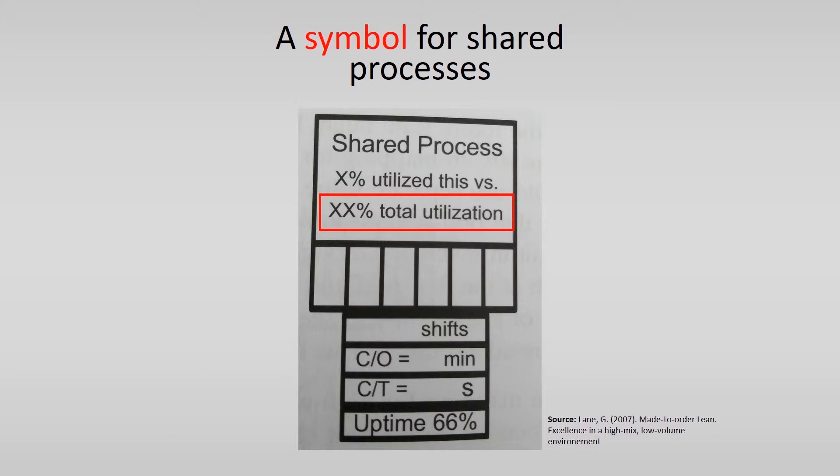These data clarifies if it is a bottleneck process or machine. For example, imagine when the total utilization is 90% and the process or machine is utilized by many different products or value streams. This results in many challenges such as planning and control.